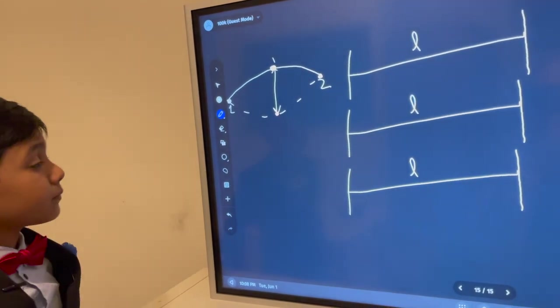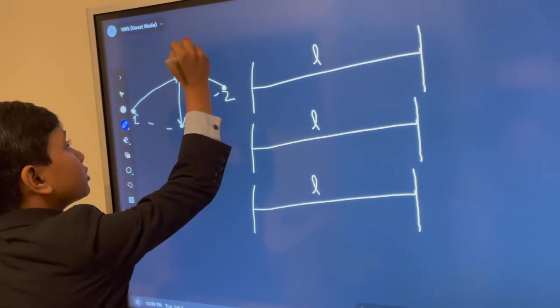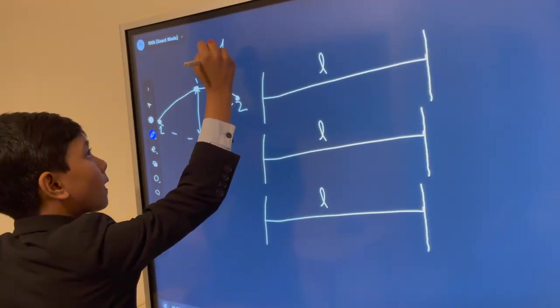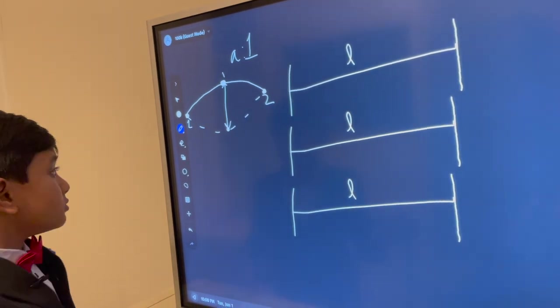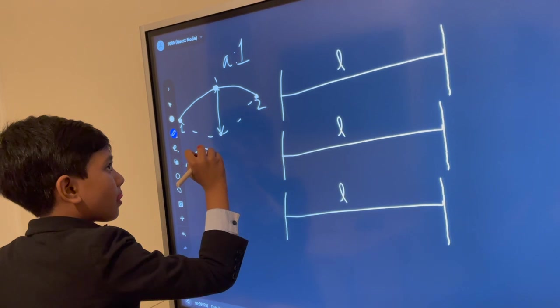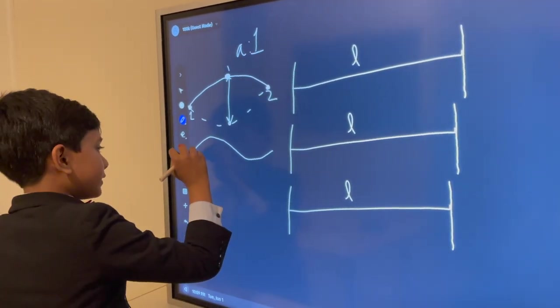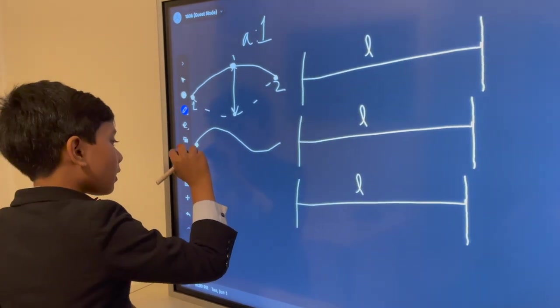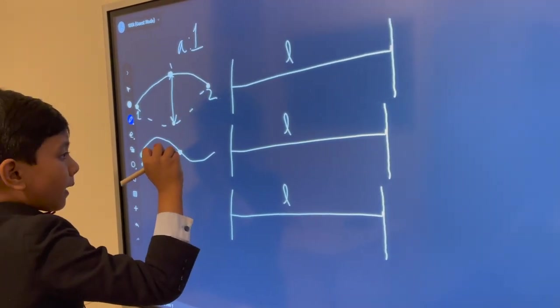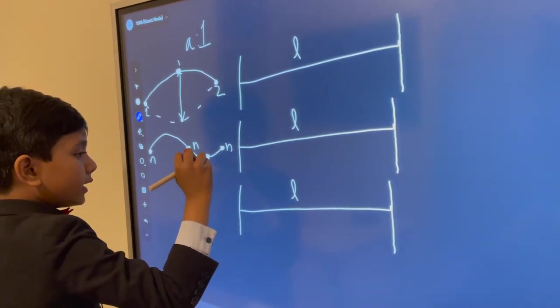All right. So now, let's look at our antinode count, 1. And now, if we look at the others, it's going to be a little bit of the same, a little bit different. So now, as you can see, there are three nodes, two antinodes.